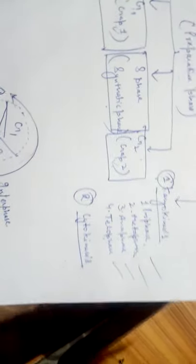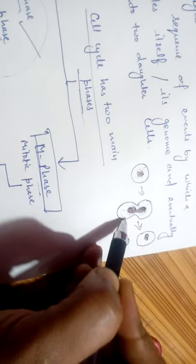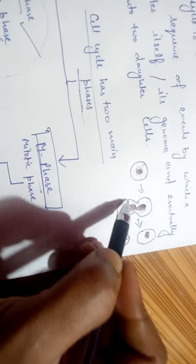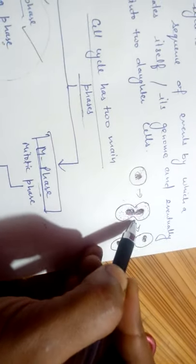The second part of the M phase is cytokinesis. Here, only the cytoplasm divides — it is cut into two cells. That is cytokinesis.